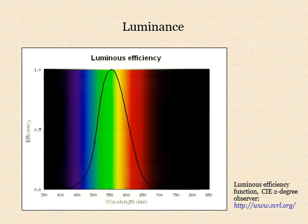The hue and colourfulness of a light are essentially the ways in which we perceive the direction and absolute magnitude of the imbalance between its long, middle and short wavelength components relative to daylight. An isolated light that has the same balance of long, middle and short wavelength components as daylight is perceived as lacking hue and colourfulness — that is, as being white light.